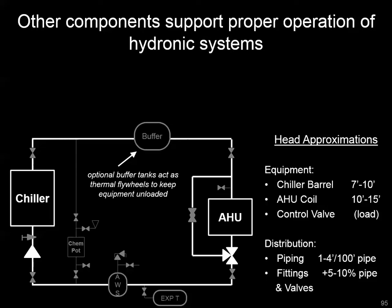You might also see for a smaller system something like a buffer tank. In a chilled water system where the chiller cannot go to a low enough load to handle all conditions, a buffer tank adds additional capacity, stretches out the on-off cycles of the chiller, and lets you leverage the thermal momentum of your piping distribution and the water inside rather than short cycling your equipment.